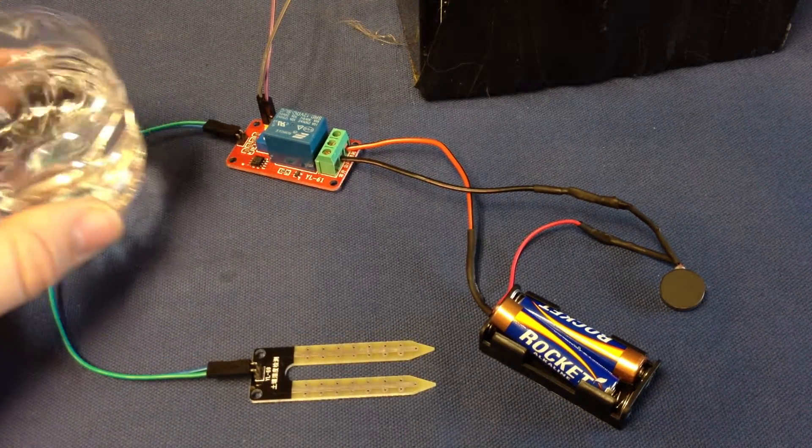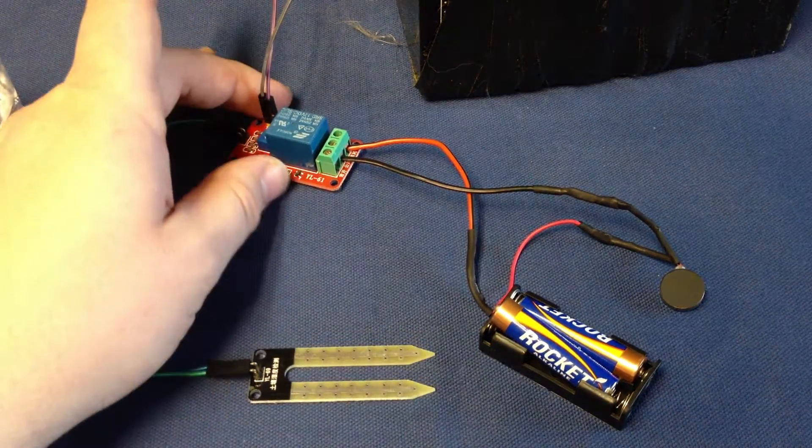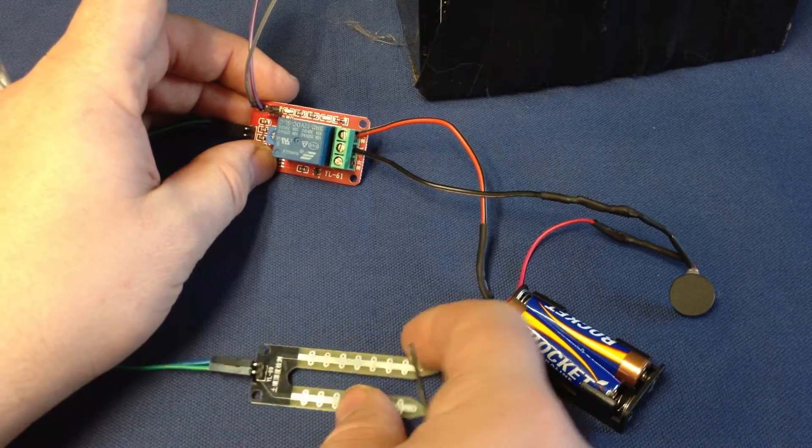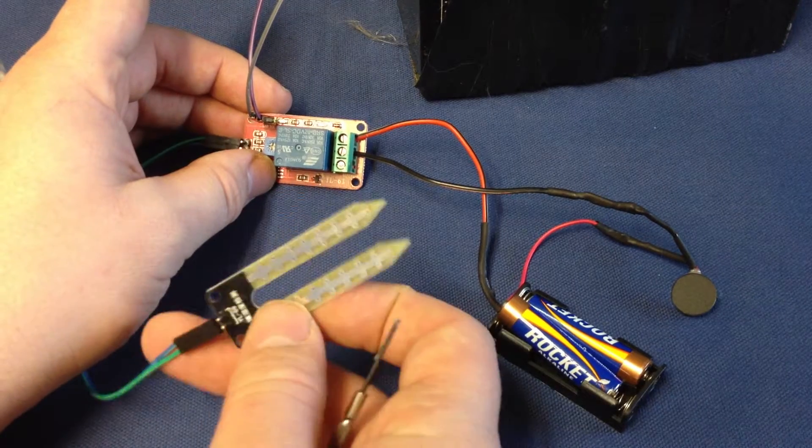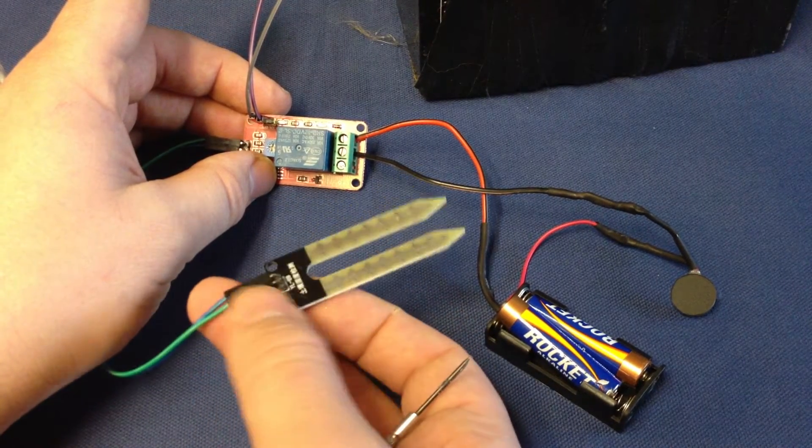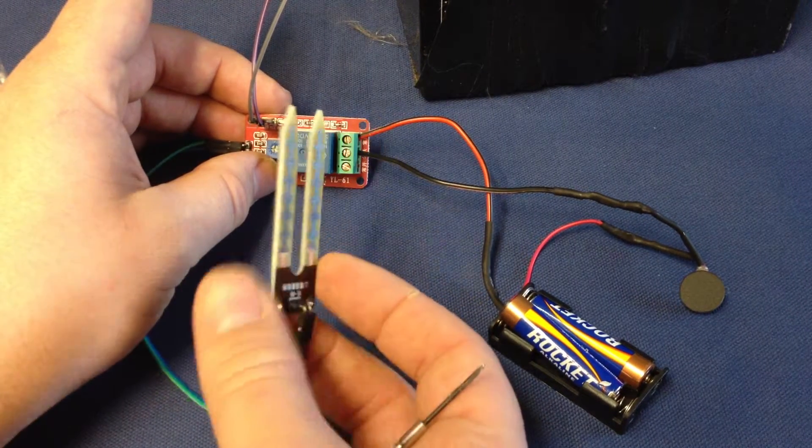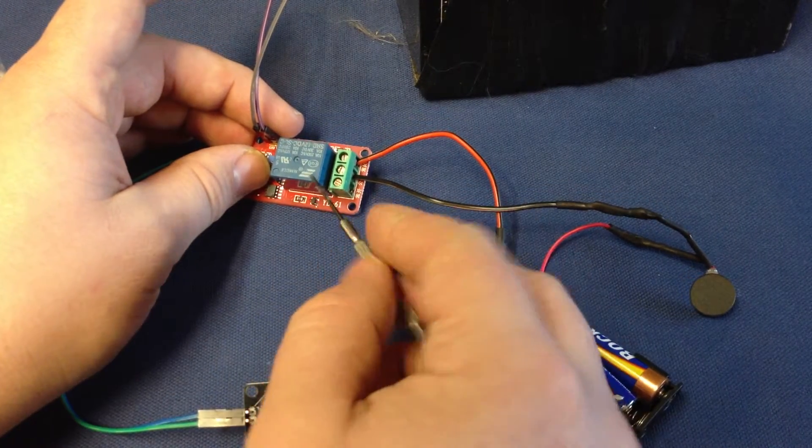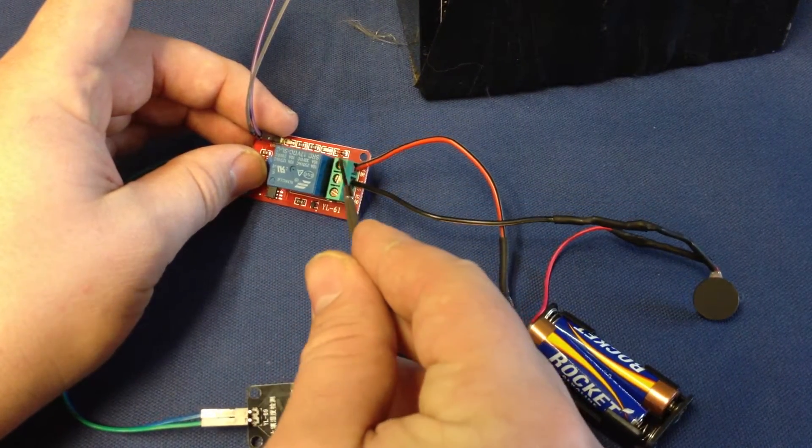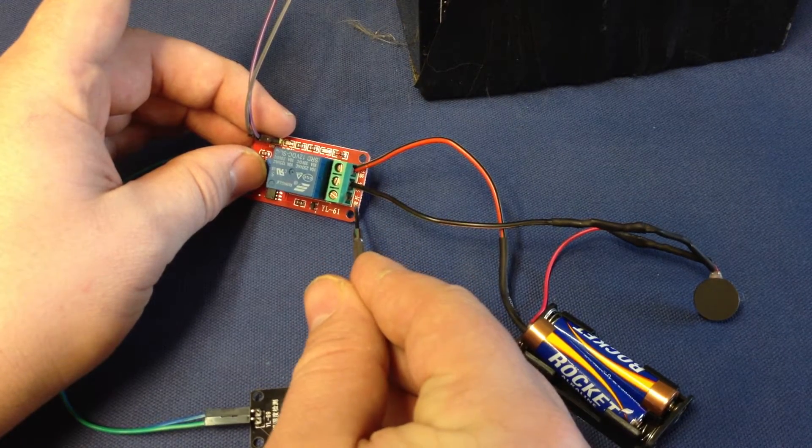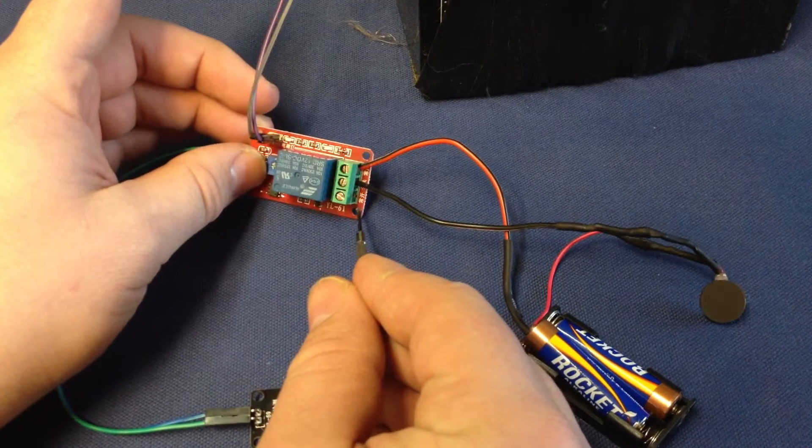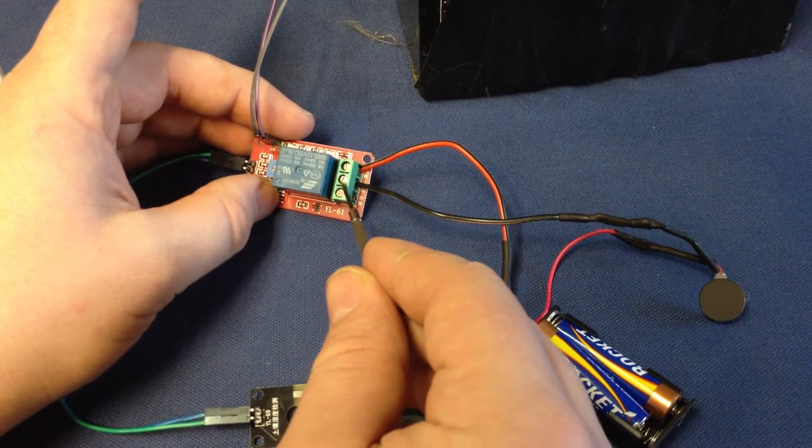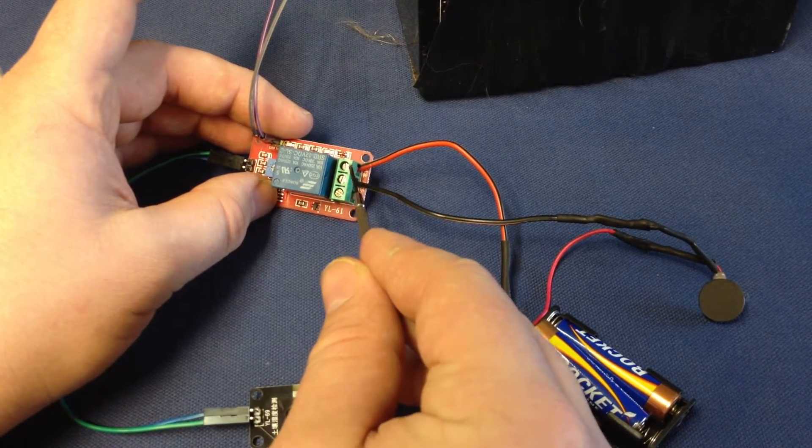Okay, this is the moisture relay sensor. Basically, it senses how much moisture there is in soil or whatever other material you're using. These little three screws right here are in Chinese, so you just have to try them to see which ones work. I think the middle is common, but I'll try them on this video to show you.